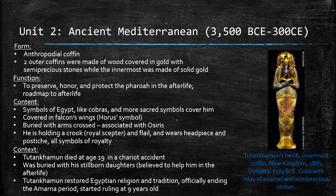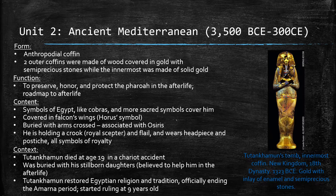Certain symbols were also thought to aid them, such as the falcon wings, crossed arms, crook, flail, headpiece, and postiche, which were either symbols of the gods or of power. Tutankhamun was also buried with his stillborn daughters, which are believed to help him in the afterlife. Since this piece has so many elements that are reminiscent of Egyptian culture, this piece is appropriate for the image of identity.